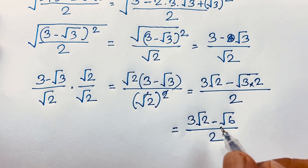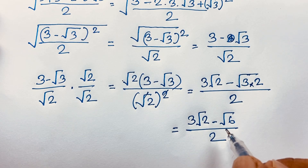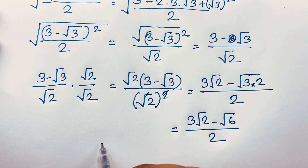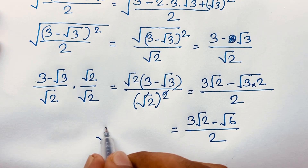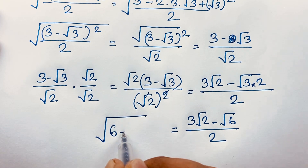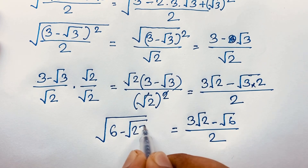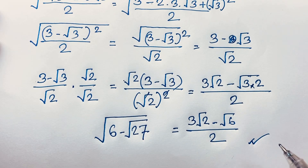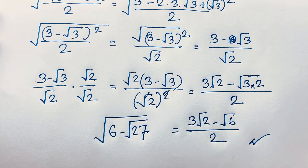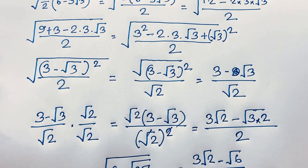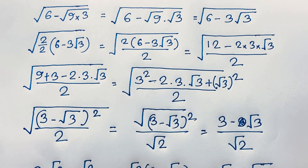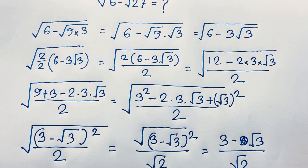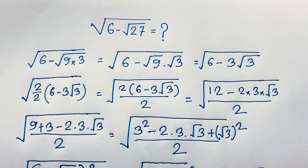This is our final answer to this math Olympiad question. So square root of 6 minus square root of 27 equals 3 square root of 2 minus square root of 6, all over 2. Thank you all — if you enjoyed this math Olympiad question, please subscribe to my channel for other interesting videos. Goodbye, take care!